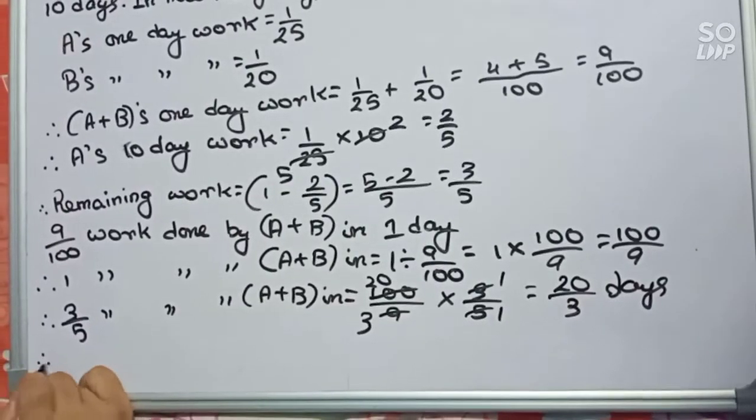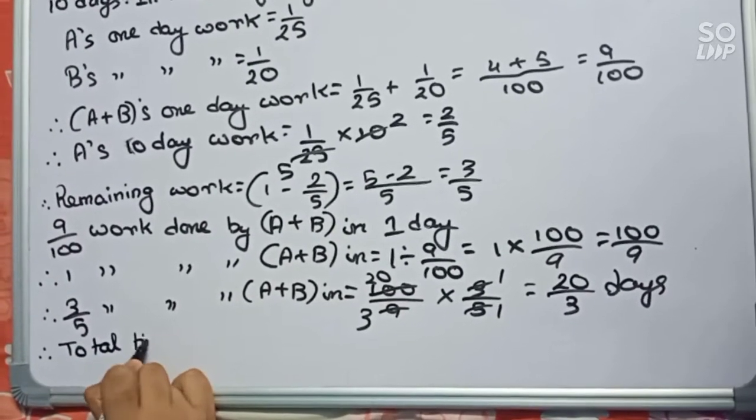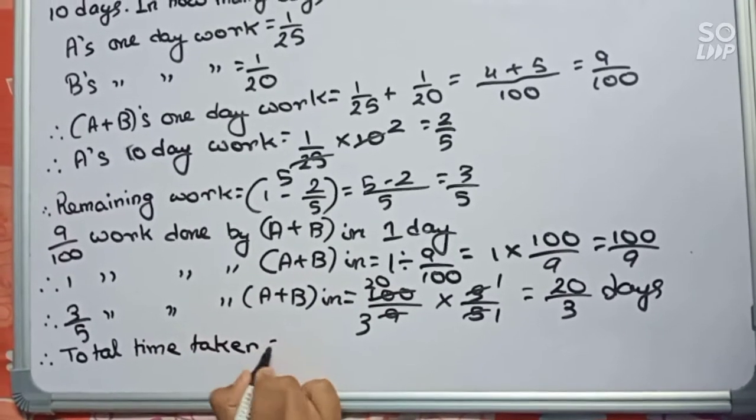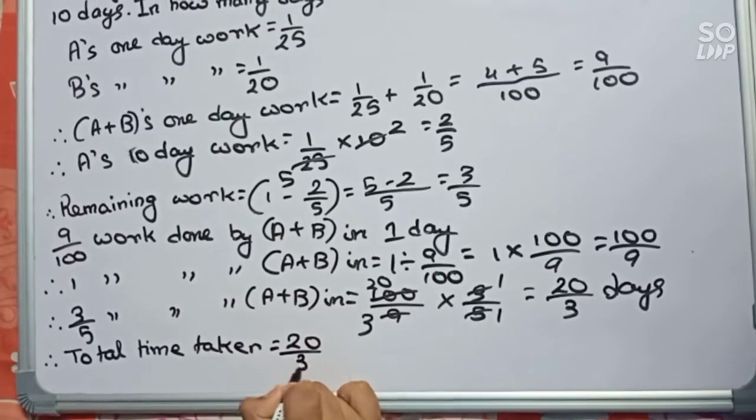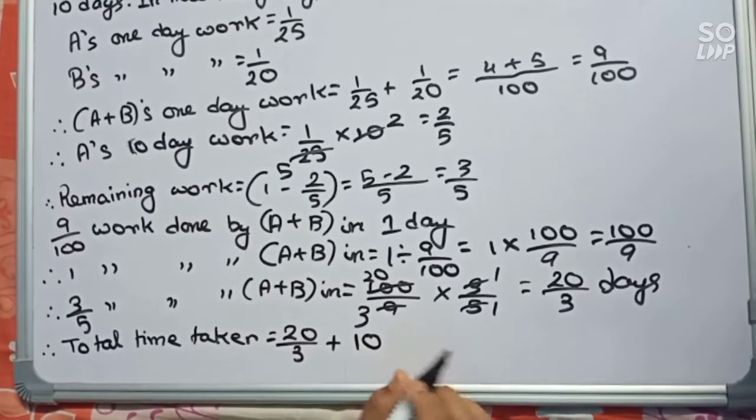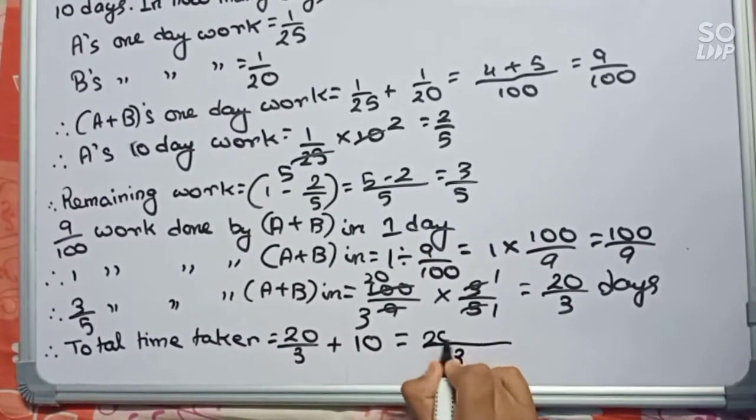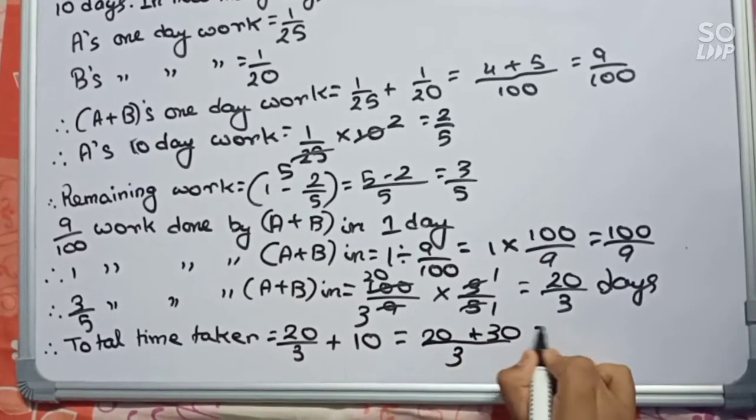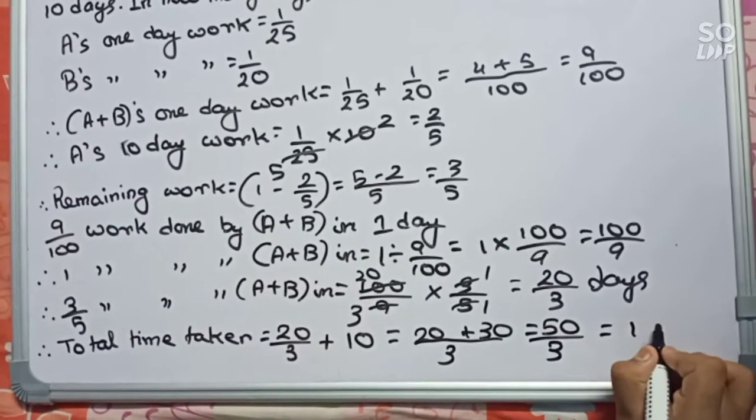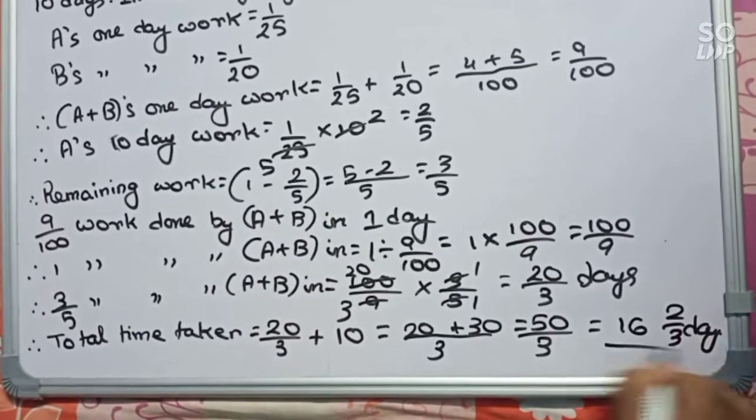Now to find the total time taken: total time taken equals 20 by 3 plus 10 days, because A has already done 10 days. This becomes 20 plus 30 by 3, which is 50 by 3, or 16 whole 2 by 3 days. This is our final answer.